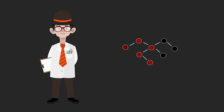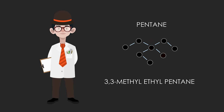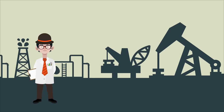Whichever way you count, the longest chain is five carbon atoms long, so the base name will be pentane. Off the third atom in the chain there is an ethyl group and also a methyl group, so its name is 3-ethyl-3-methylpentane. However, this compound is not normally found in crude oil and is very expensive.